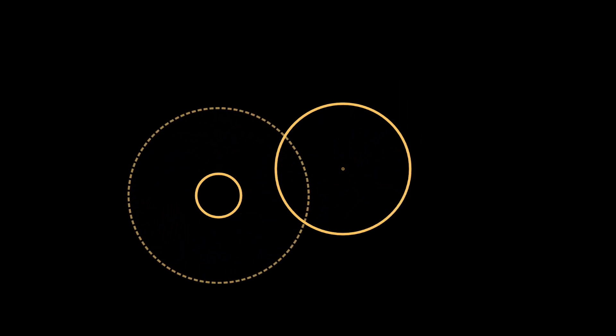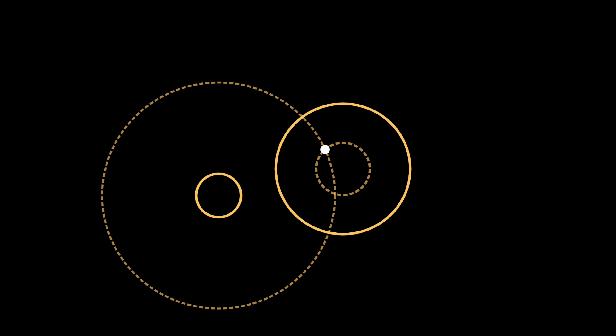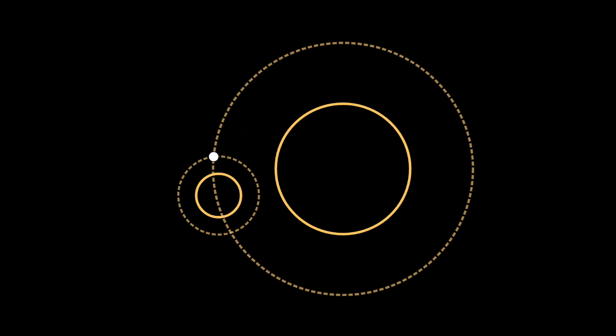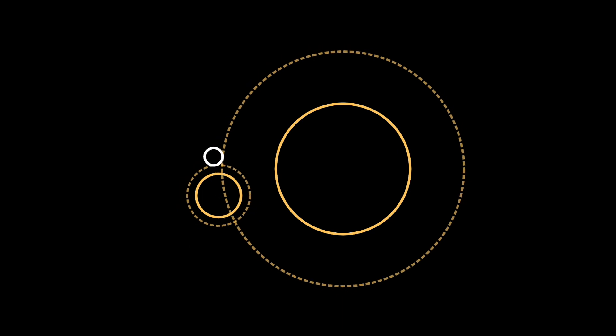We can also grow one circle and shrink the other and vice versa. This will give us two more types of tangents, external-internal and internal-external.